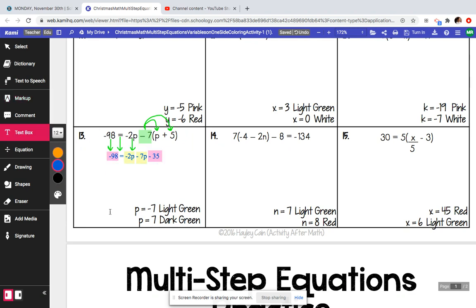So from here, you can choose what you want to combine first. I will go ahead and combine my p's first. And so what that means is we're going to drop down this negative 98 because we're not going to touch it. We're going to drop down this equal sign, and we are going to drop down this negative 35. So we are at negative 98 equals, and then we're going to combine our p's. So negative 2p minus 7p is going to leave us with a negative 9p minus 35 because we haven't touched that yet.